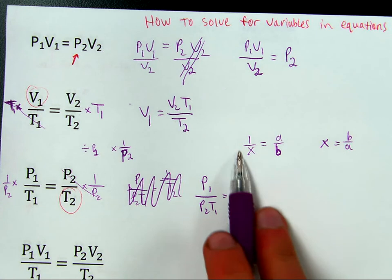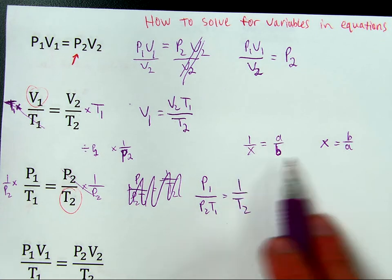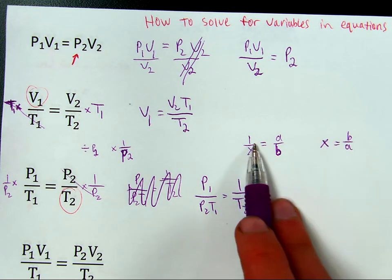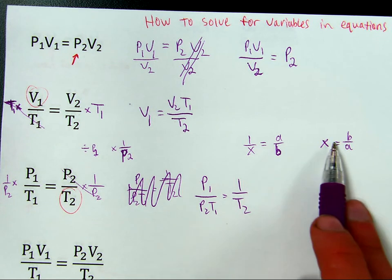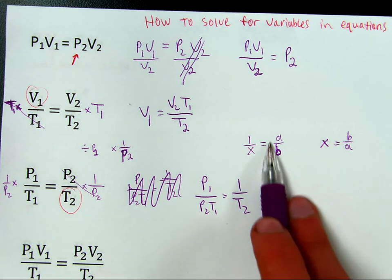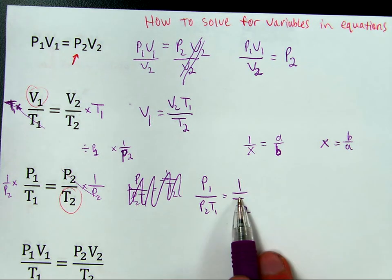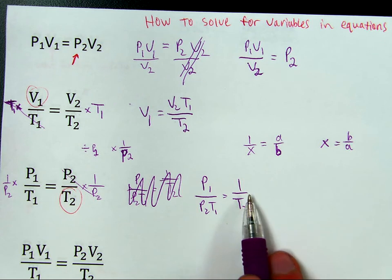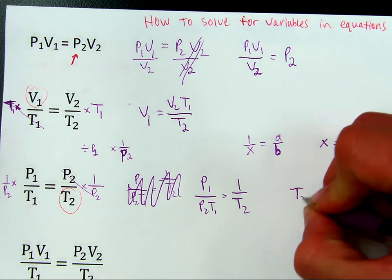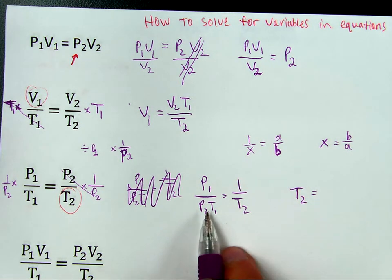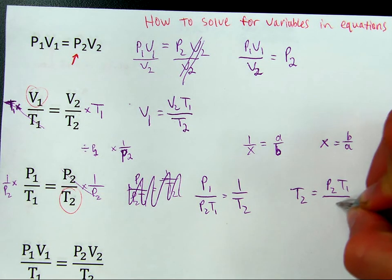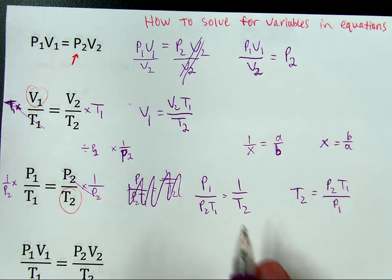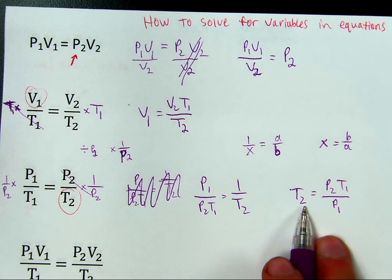This is equivalent to this. So, I can flip this side, but it requires flipping the other side also. So, flipping this makes this. Flipping this side makes this. Here, I can do the same thing. If I flip this, I get T2. But, I also have to flip the other side. P2, T1 over P1. Now, I have a correct version of this.